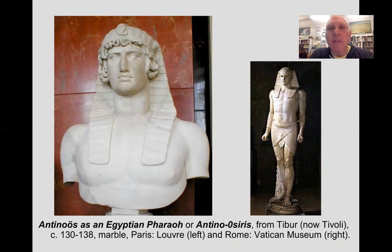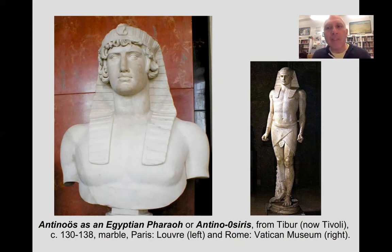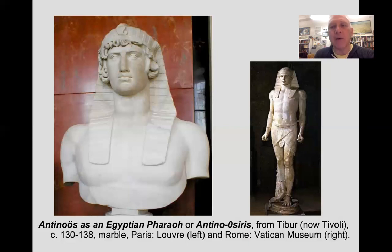Strangely enough, Antinous the lover drowns during the celebration of the cult of Osiris, during the local Egyptian celebrations along the Nile. His body is recovered. The emperor immediately plunges into mourning — in fact, takes the entire empire with him into mourning for his dead lover. He is so moved by the loss of his lover that he deifies him. He has in fact a new cult established, and this would become the cult of Antinousiris, directly identifying his lover Antinous with the ancient Egyptian god Osiris.